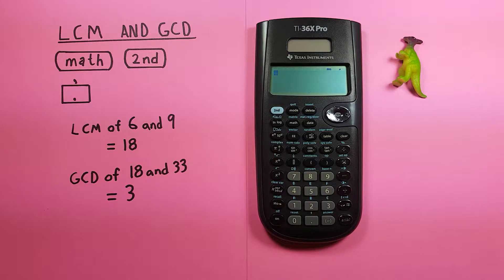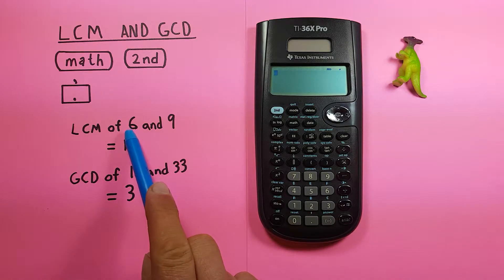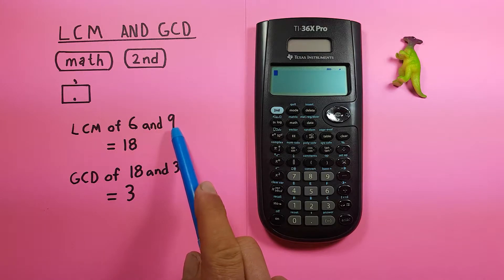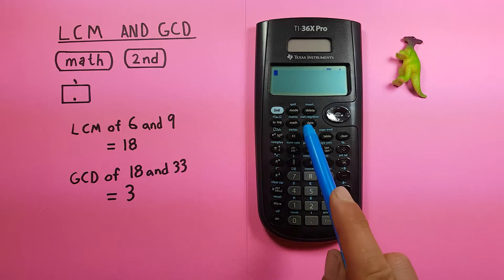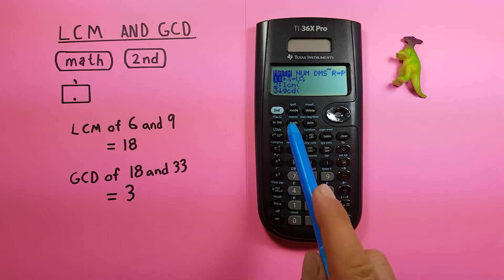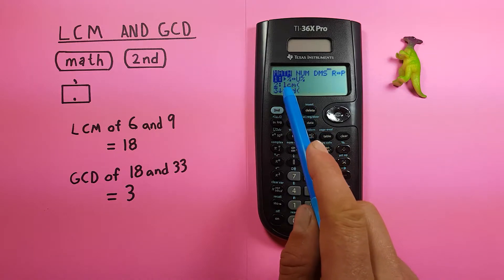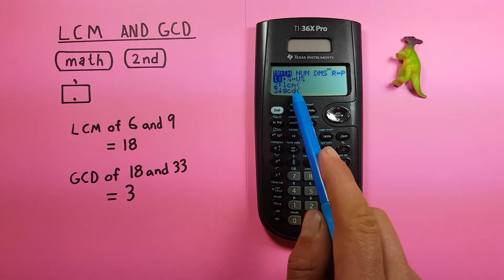For our first example if we want to find the least common multiple of two numbers, let's say the least common multiple of six and nine, what we do is first we press the math key. That brings us to this menu and you can see LCM is number two there and number three is GCD.